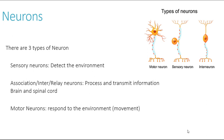Sensory neurons are responsible for detecting the environment — this might be our external environment, the world around us, or possibly any changes within our internal environment. Interneurons are responsible for processing and transmitting information within the brain and the spinal cord. Finally, the motor neuron is there to respond to the environment and quite often will involve the movement and the contraction of muscles.